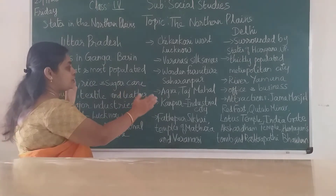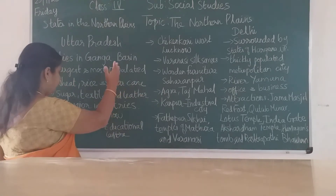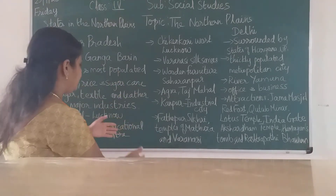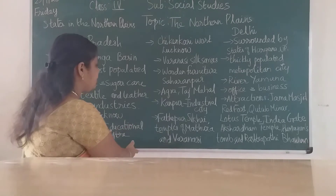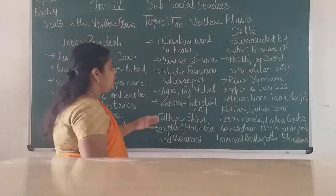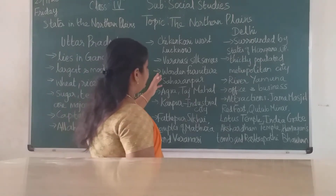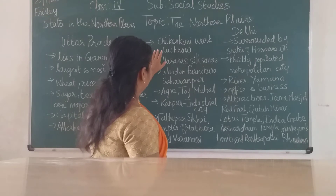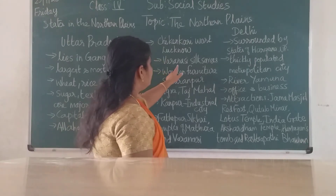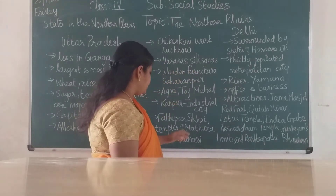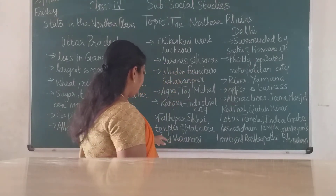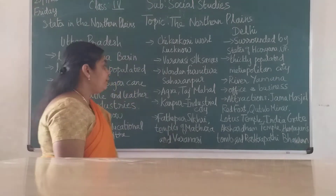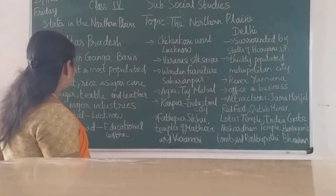So Uttar Pradesh has so many famous things — important industrial centres, educational centres, and it is famous for many items like Chikankari work, silks, wooden furniture, and the temples of Mathura and Varanasi.